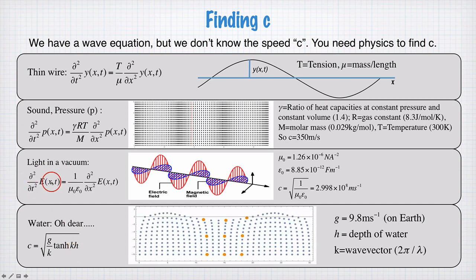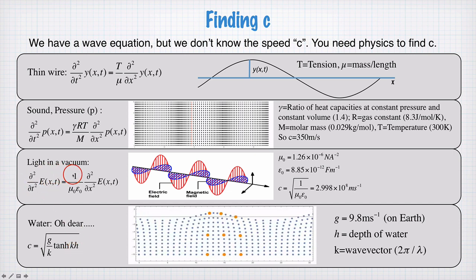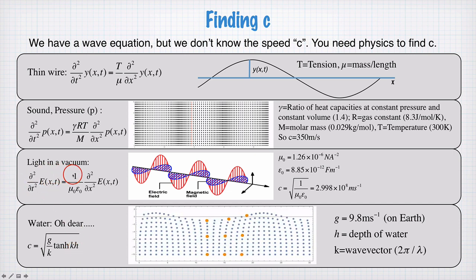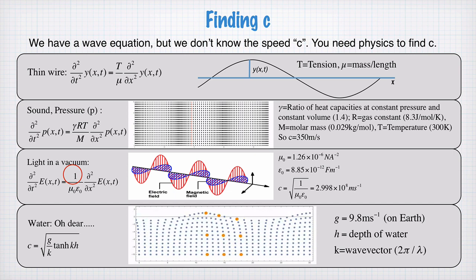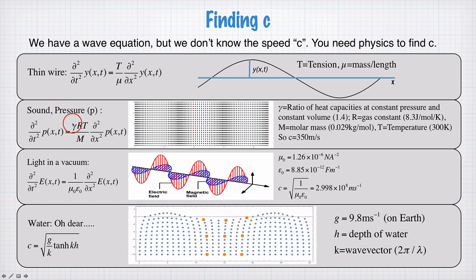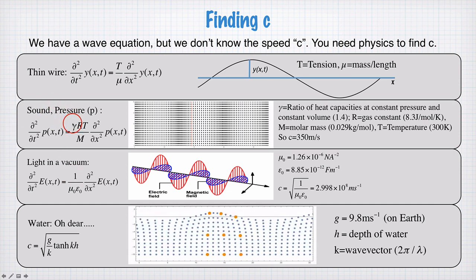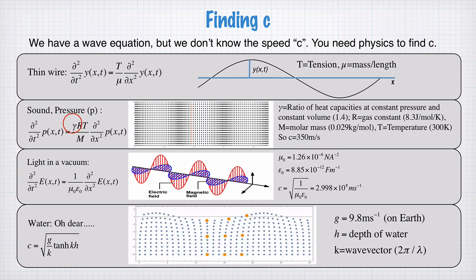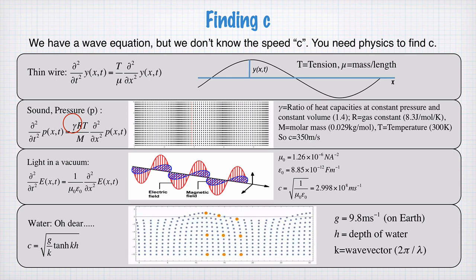This is in contrast to, say, light in a vacuum, which is not dispersive at all. Light can undergo dispersion if it travels into a medium like glass, where the speed changes as a function of wavelength. Sound waves in air are very weakly dispersive. It's hard to measure any sort of dispersion for sound in air.